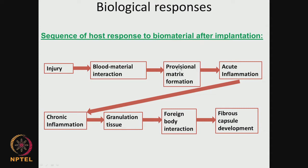Then there is a provisional matrix formation. If there is a blood-material interaction, coagulation can start happening. There could also be complement activation. Then you have acute inflammation at the site, which leads to chronic inflammation, then formation of granulation tissue for in-body interaction, and finally the material could be completely encapsulated — that is, fibrous capsule development.